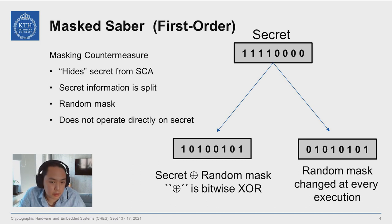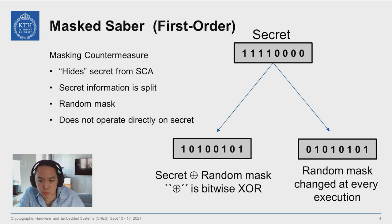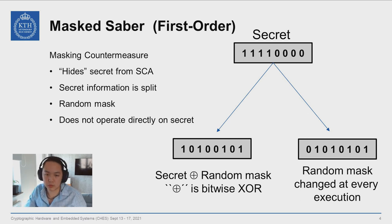Masking is considered an effective but computationally expensive countermeasure, because we have essentially doubled the computation effort by executing the protected code section twice for each share.